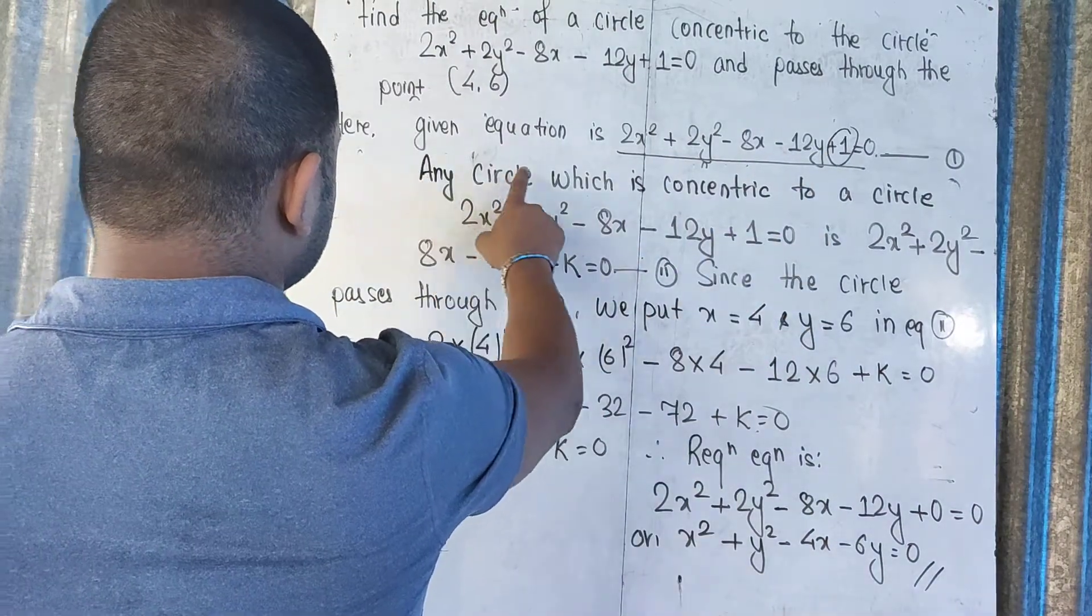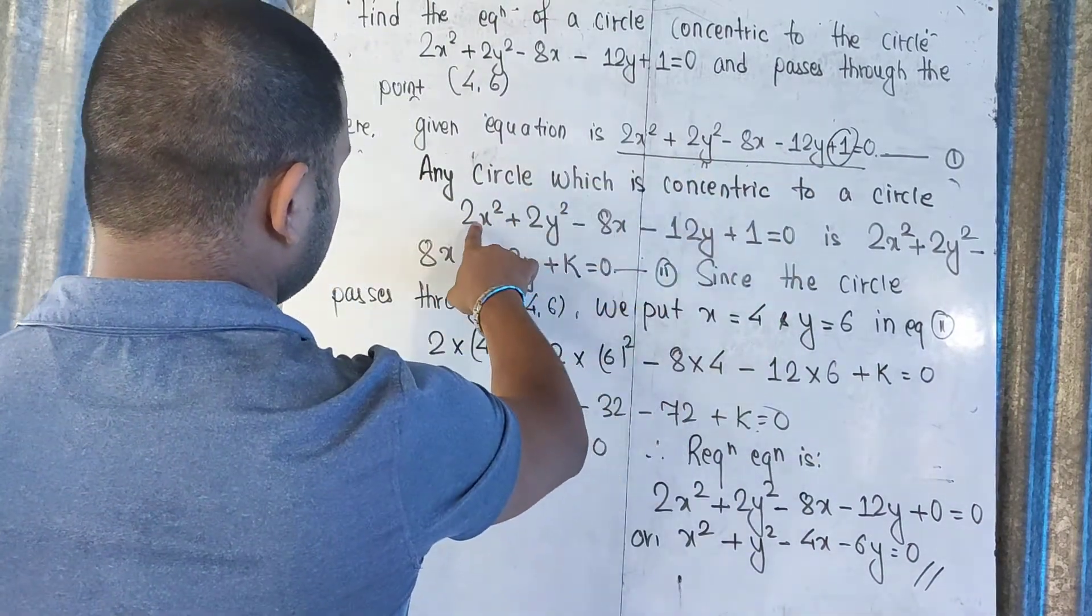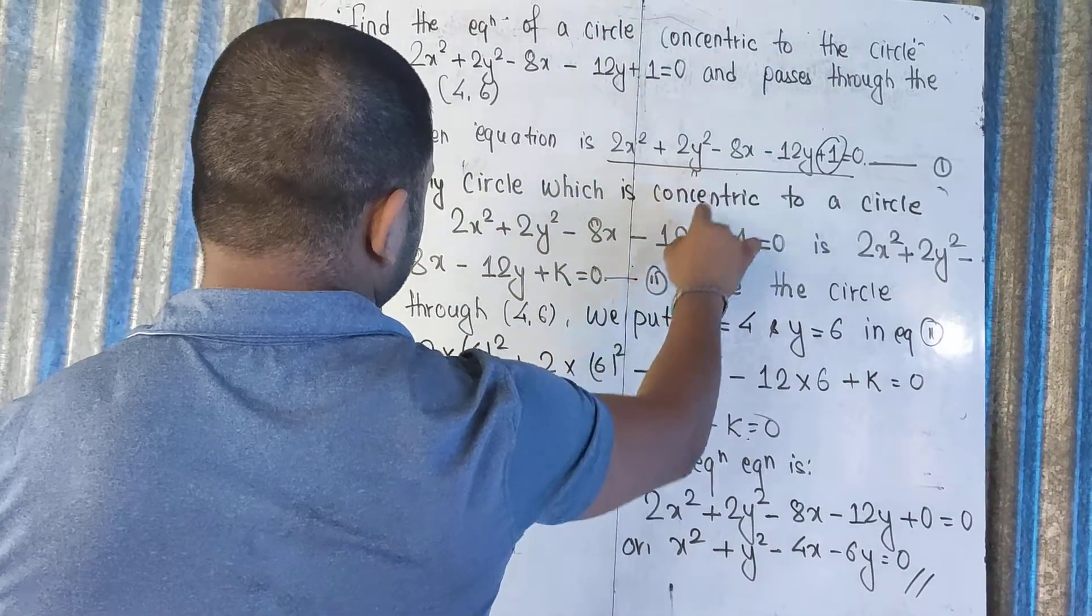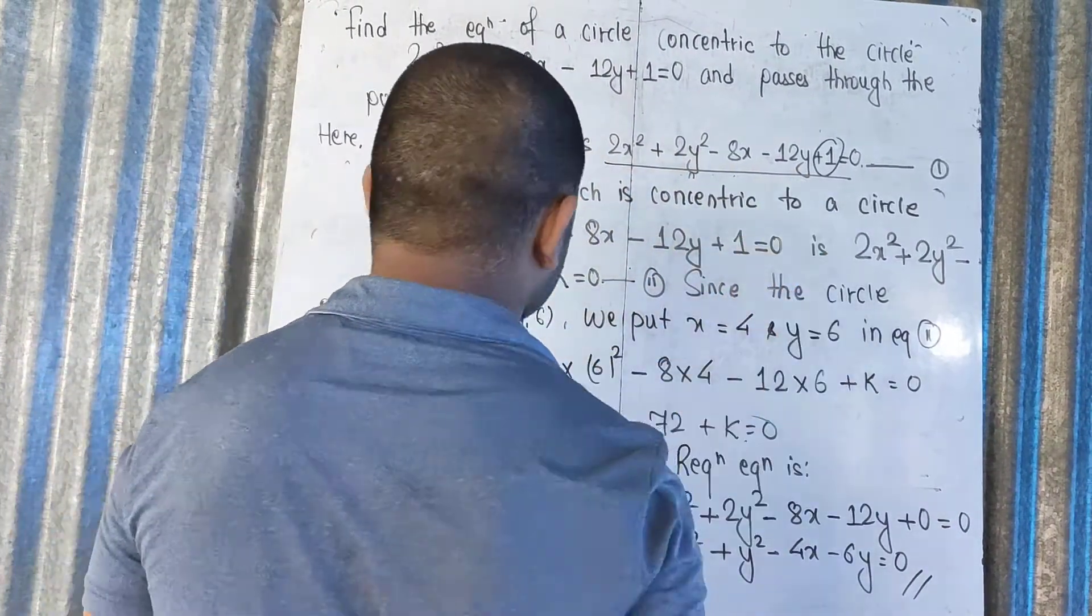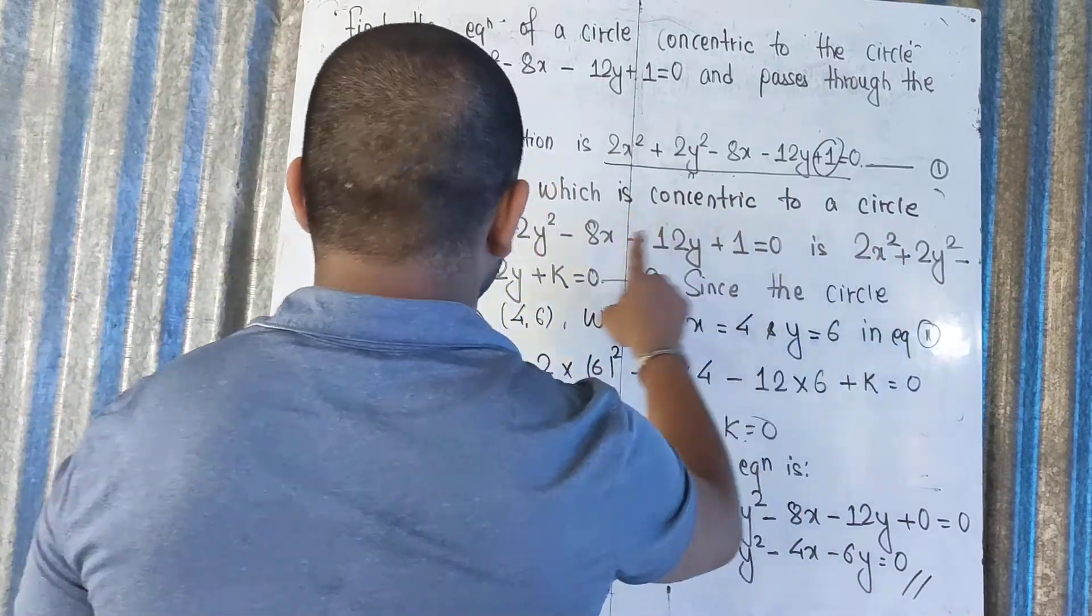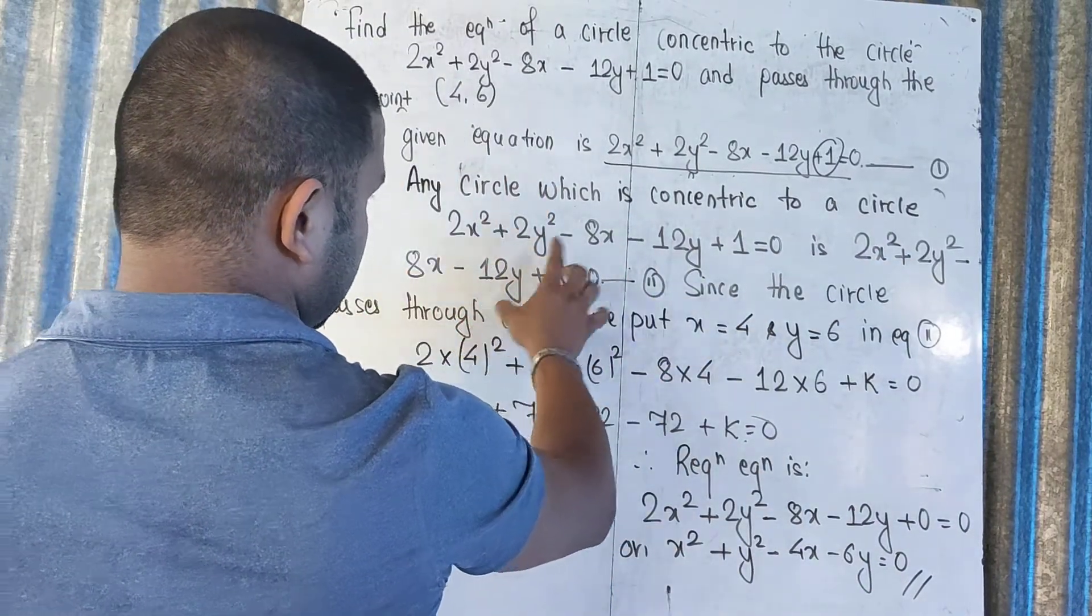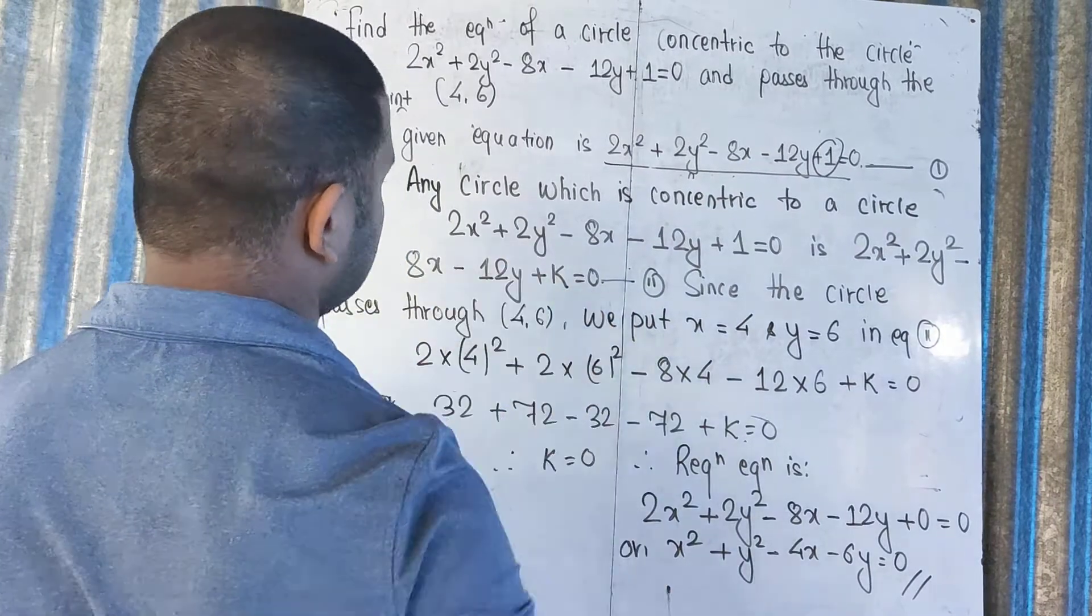Then, this is the circle, here is the structure 2x² + 2y² - 8x - 12y + 1 = 0. But we are going to get 1, we are going to get 0.